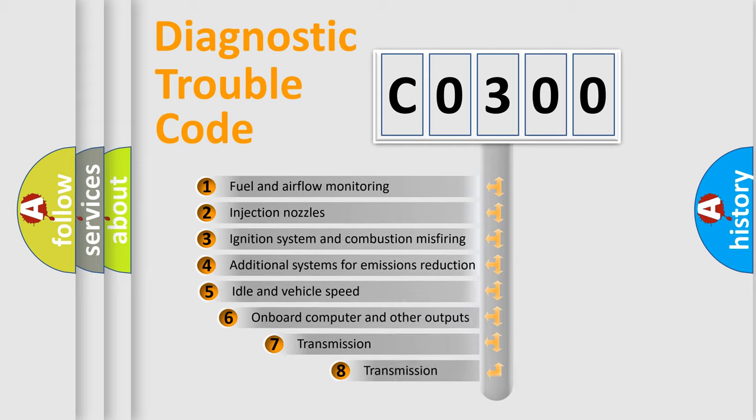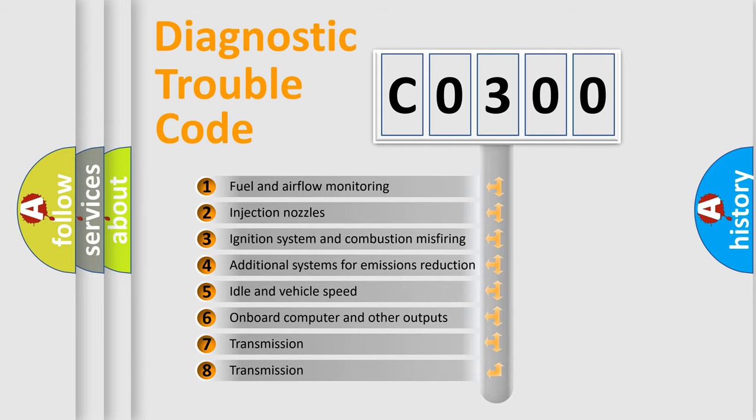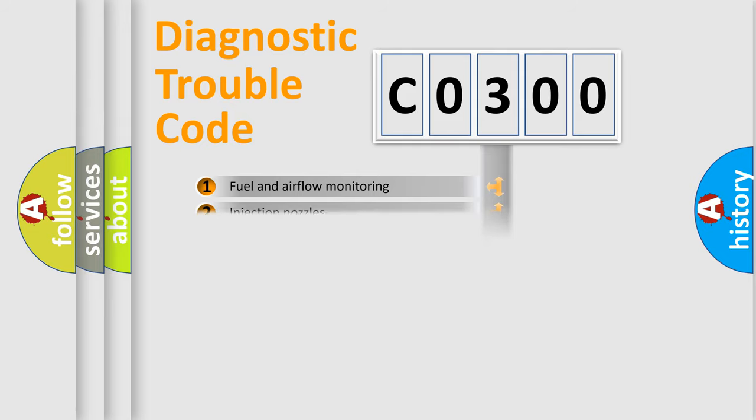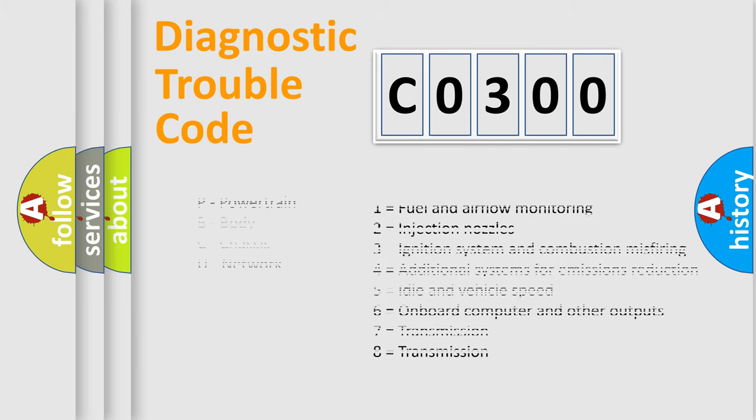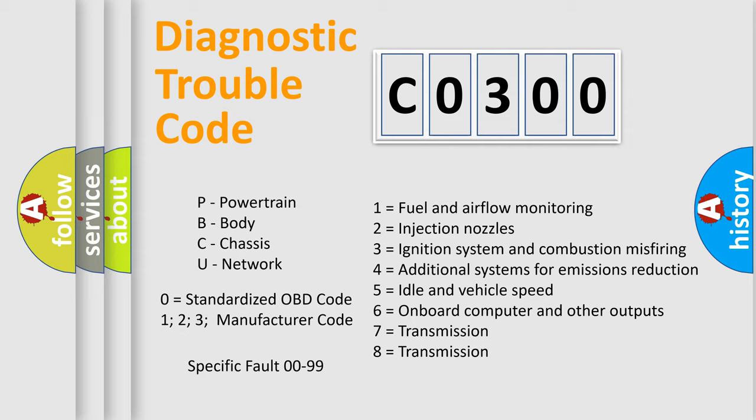The third character specifies a subset of errors. The distribution shown is valid only for the standardized DTC code. Only the last two characters define the specific fault of the group. Let's not forget that such a division is valid only if the other character code is expressed by the number zero.